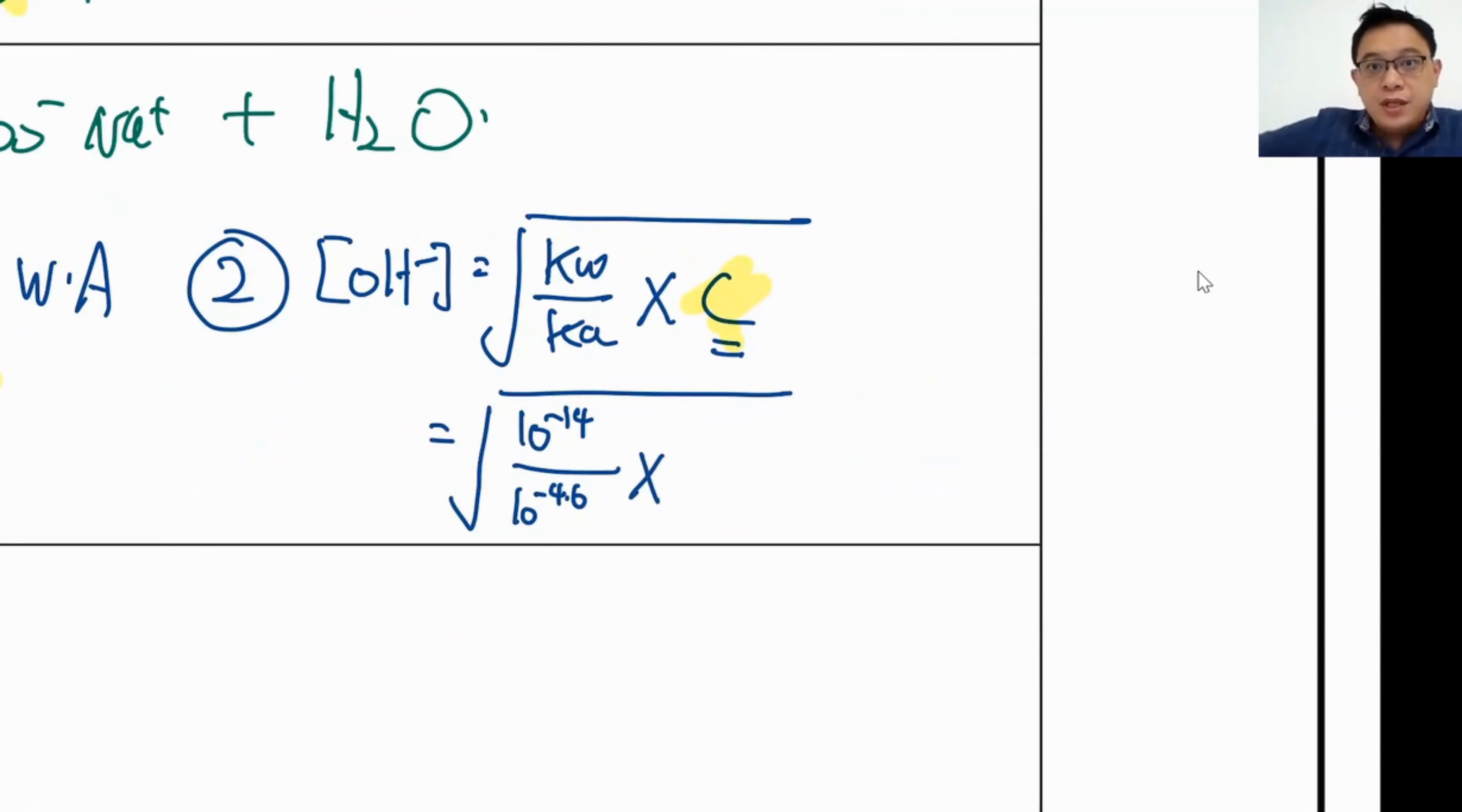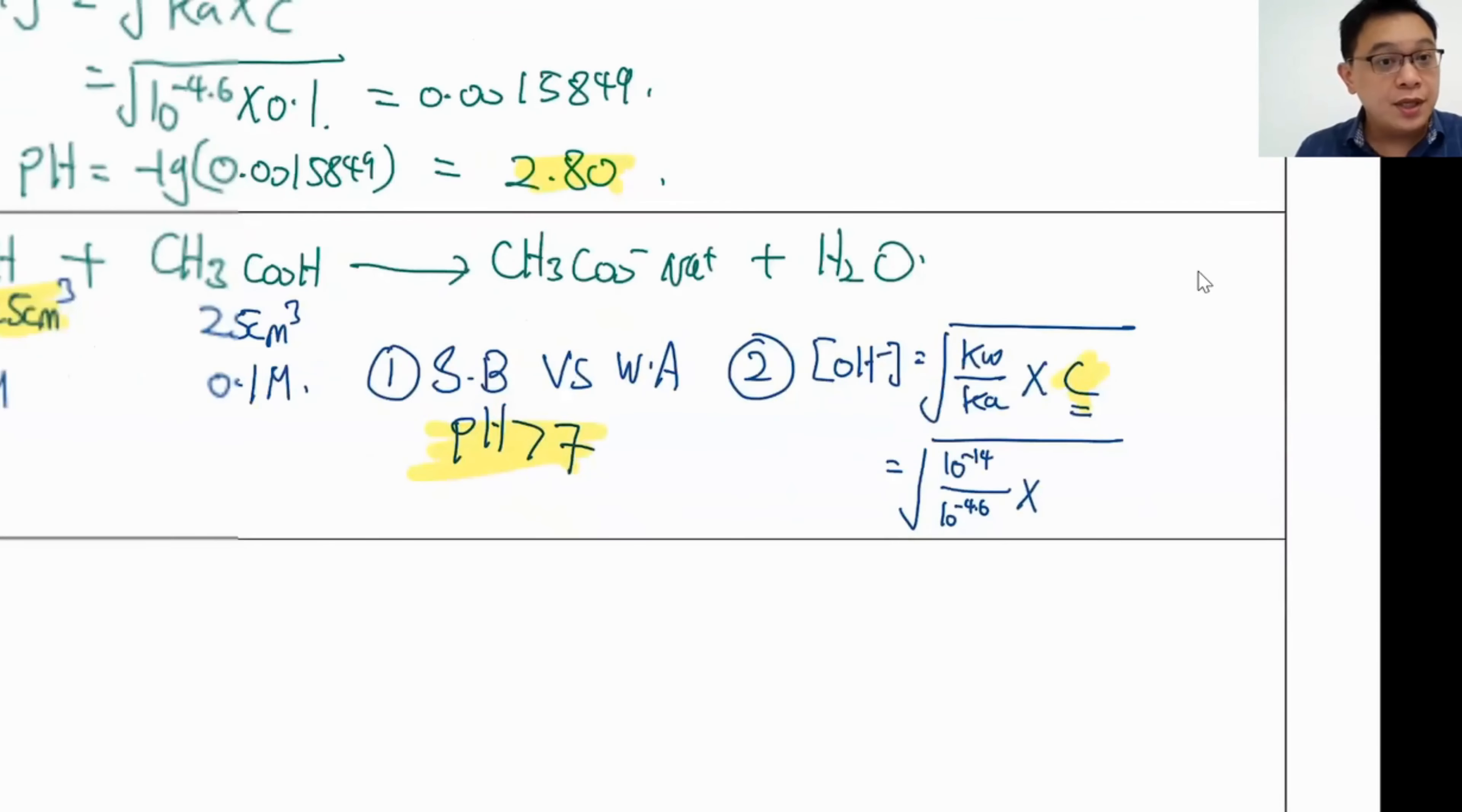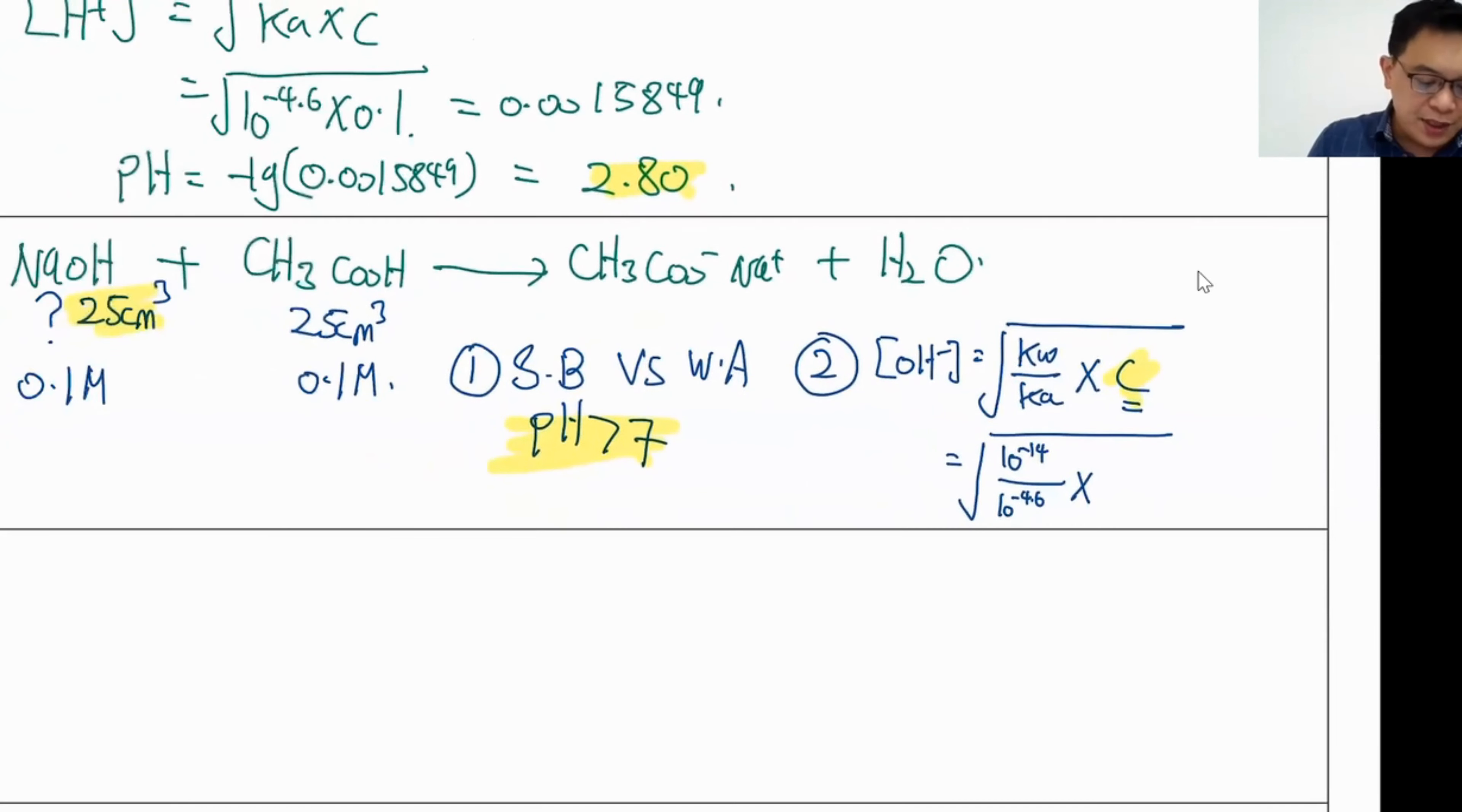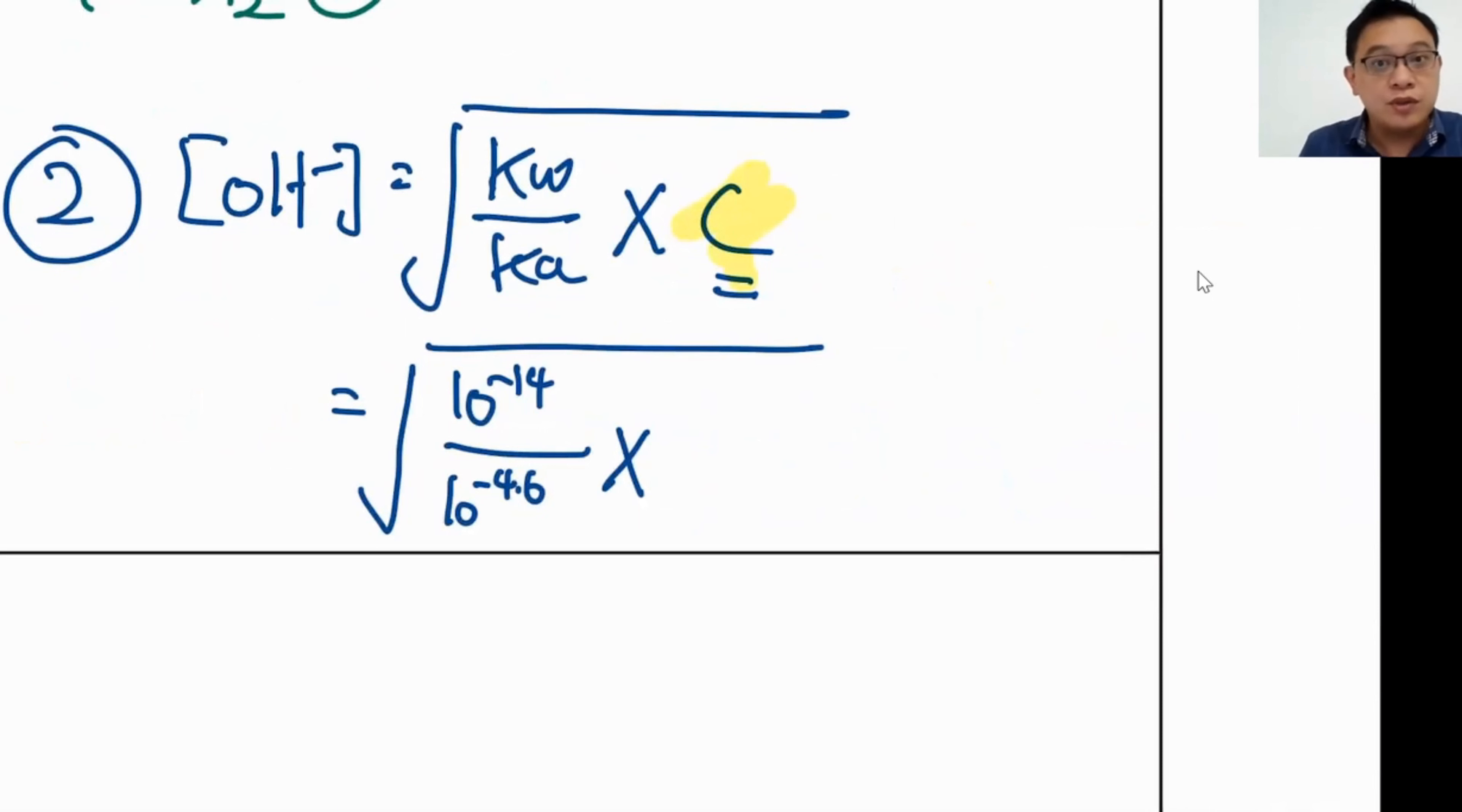And multiply by the C. Now, why is C tricky? First of all, let's take a look at the equation one more time. So I will say that everybody is a 1 is to 1 is to 1 ratio. Which means that first of all, I need to determine the moles of your salt. I would take 25 over 1000 times 0.1.